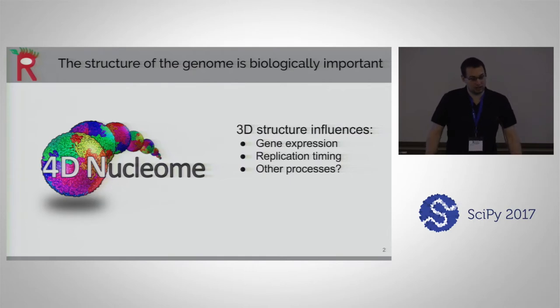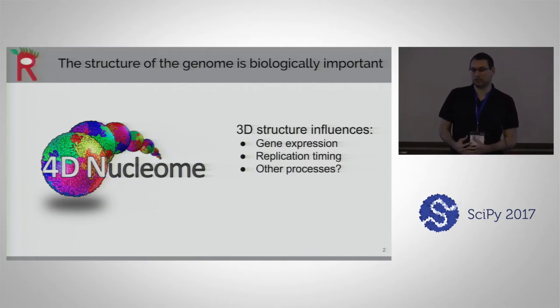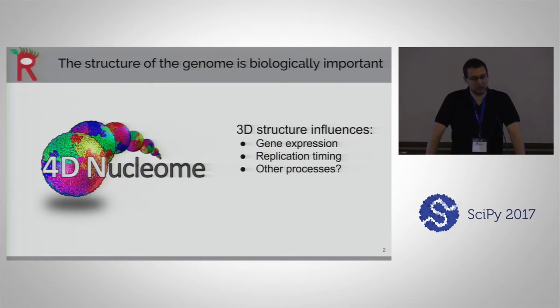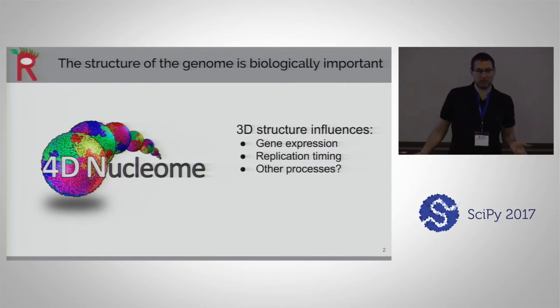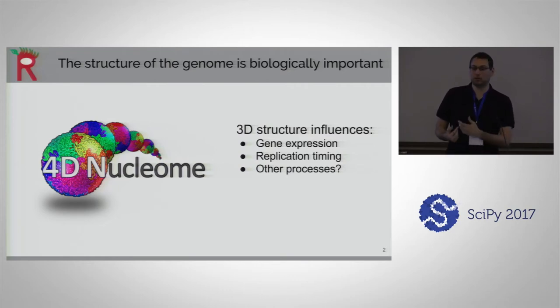A few years ago, the government realized that data on the three-dimensional structure of the genome was incredibly important. A lot of bioinformatics tasks tried to infer genome structure to make better predictions but weren't able to record it directly. For example, with gene expression, it was originally thought that genes were regulated by nearby regulatory elements on the DNA sequence. That's partly true, but what's even more true is that genes are regulated by elements that are nearby in the three-dimensional structure of the genome.